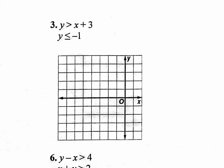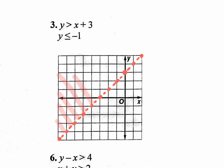Let's jump to number 3 and use the shortcut. It crosses at 3 and goes up 1 over 1. Use that pattern backwards all the way across. Is this a solid line or dotted? Dotted — it does not have a solid line underneath the inequality. Now, shade above or below? The symbol says greater than, which means above. So simply shade above.